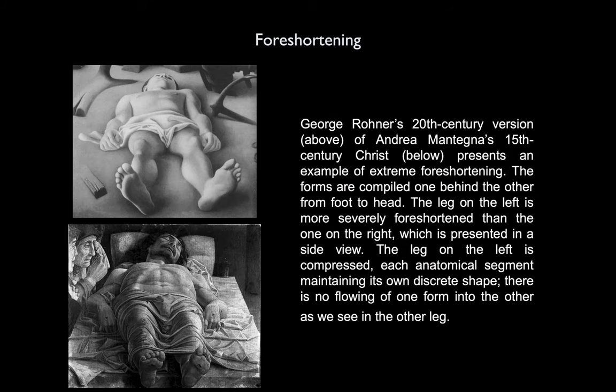George Rauner's 20th century version of Andrea Mantegna's 15th century Christ represents an example of extreme foreshortening. The forms are compiled one behind the other from foot to head. The leg on the left is more severely foreshortened than the one on the right, which is represented in a side view. The leg on the left is compressed, with each anatomical segment maintaining its own discrete shape. There's no flowing from one form into the other as we see in the other leg. When dealing with this kind of extreme foreshortening, it's really a series of overlapping shapes, one stacked on top of the other.